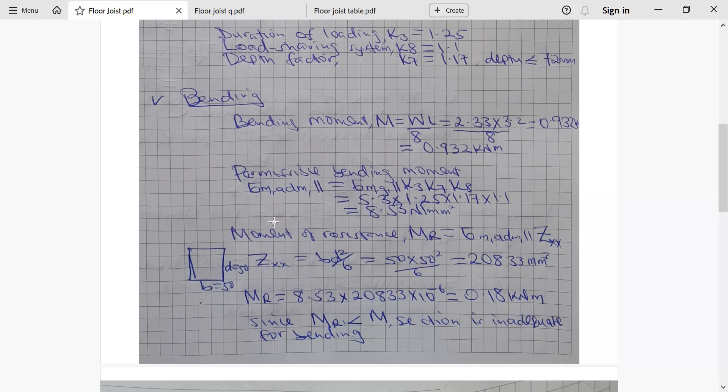Then we go to permissible bending moment. Permissible means what the section can carry comfortably. Permissible bending moment is normally given by the bending stress we read from the table, multiply by factor K3, multiply by factor K7, and multiply by factor K8. This will give us 8.53 newton per millimeter squared.